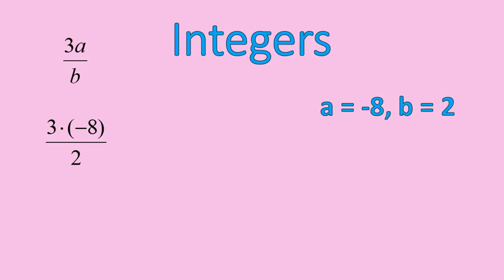The first step for solving this is to substitute negative 8 in for the letter a and positive 2 in for the letter b. Notice it becomes 3 times negative 8 in the numerator and just 2 in the denominator. Now let's continue to solve.